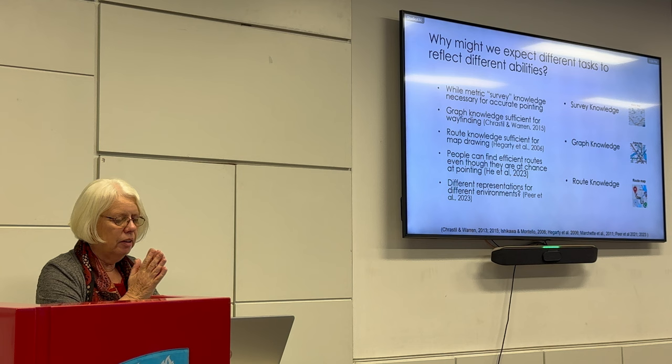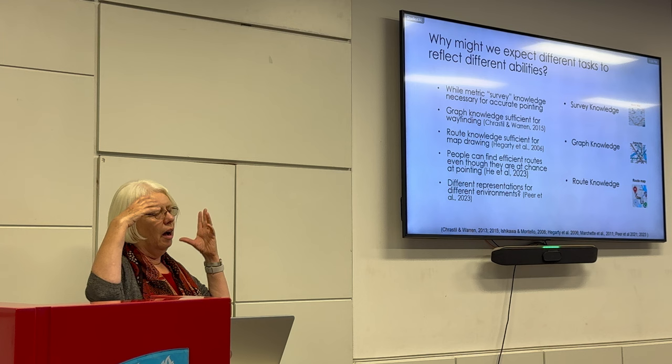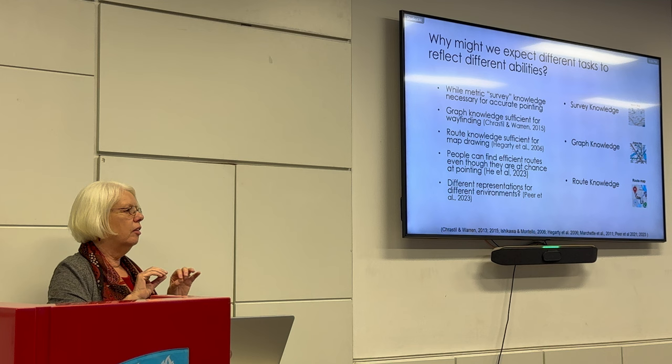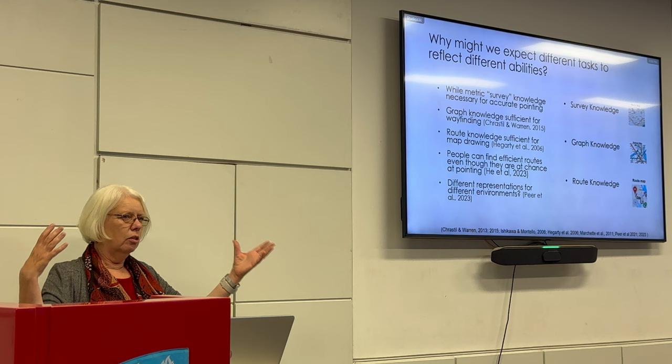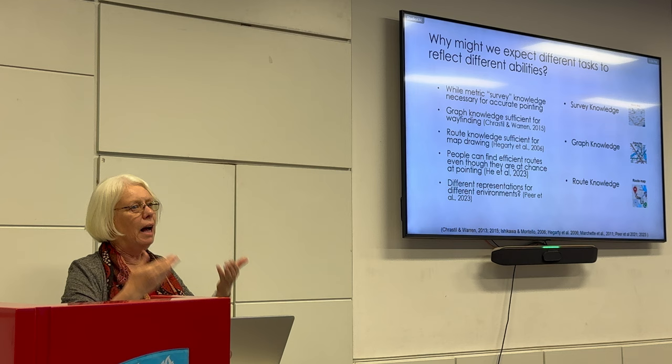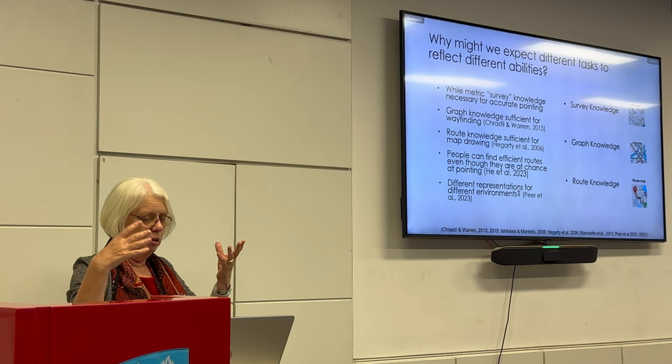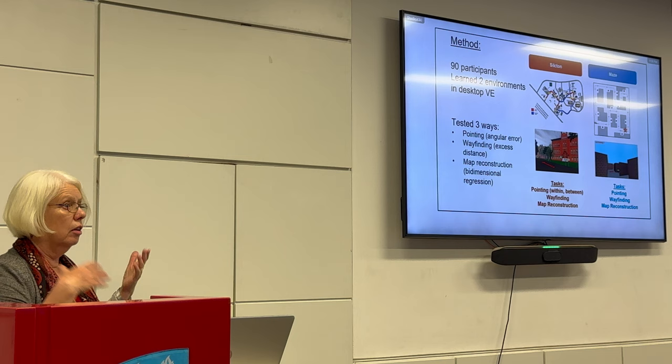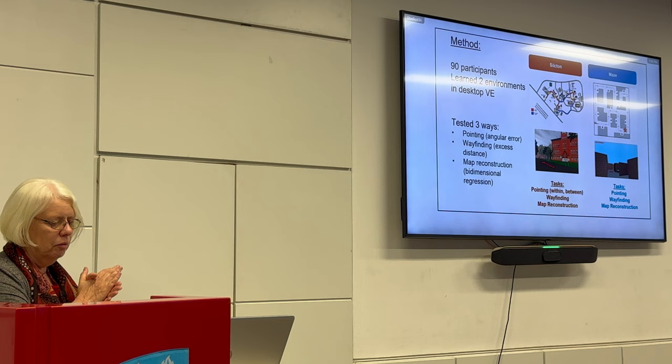In terms of measures of configurational knowledge, the assumption is that we're measuring a cognitive map — a sense of the layout of the environment. But people have pointed out that to navigate efficiently, you may not need a metrically accurate cognitive map. You could just know that this corridor gets you to this building. Or you can draw a map of an environment if you just have a good route in your head — you draw the route on paper and it becomes a map.